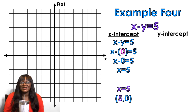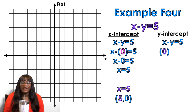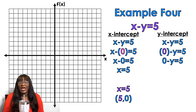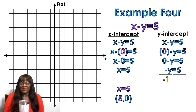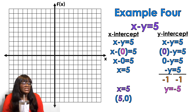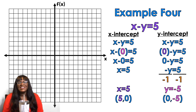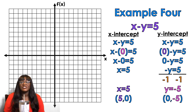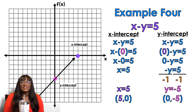For the y-intercept of x minus y equals 5, we plug in 0 for x. So 0 minus y equals 5 — I get negative y equals 5. Divide by negative 1 — y equals negative 5. My coordinate is (0, negative 5). Now we plot the points: the x-intercept at 5 on the x-axis, and the y-intercept at negative 5 on the y-axis. Now I have both intercepts and can draw a line.